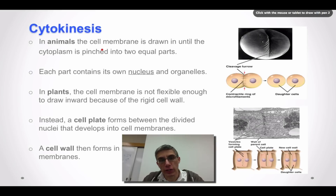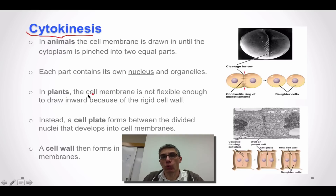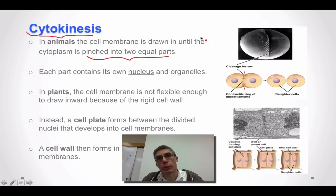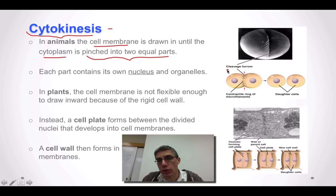The second part of the M phase is called cytokinesis, which means a separating of the cytoplasm and cell membrane in animal cells, or the cell wall and cell membrane in plant cells. In animal cells, the cell membrane is drawn in until the cytoplasm is pinched into two equal parts. This pinched-in part is called the cleavage furrow, and as it continues to pinch in, it eventually separates the cell into two brand new daughter cells, each with its own nucleus and organelles.